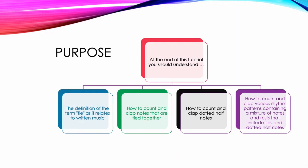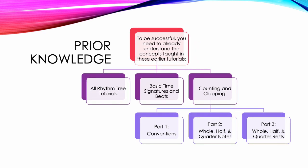At the end of this tutorial, you should understand the definition of the term tie as it relates to written music, how to count and clap notes that are tied together, how to count and clap dotted half notes, and how to count and clap various rhythm patterns containing a mixture of notes and rests that include ties and dotted half notes. To be successful, you need to already understand the concepts taught in these earlier tutorials: All Rhythm Tree Tutorials, Basic Time Signatures and Beats, Counting and Clapping Part 1 Conventions, Part 2 Whole Half and Quarter Notes, and Part 3 Whole Half and Quarter Rests.